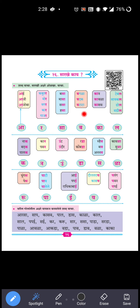Next: Bagda, Badak, Batata - the first similar letter is 'ba'. Bagda, Badak, Batata all start with 'ba'. So the first similar akshar is 'ba'. Next: Kaan, Kaavda, Kaasav - what is similar? Kaan, Kaavda, Kaasav - all start with 'ka'. So 'ka' is the similar part.